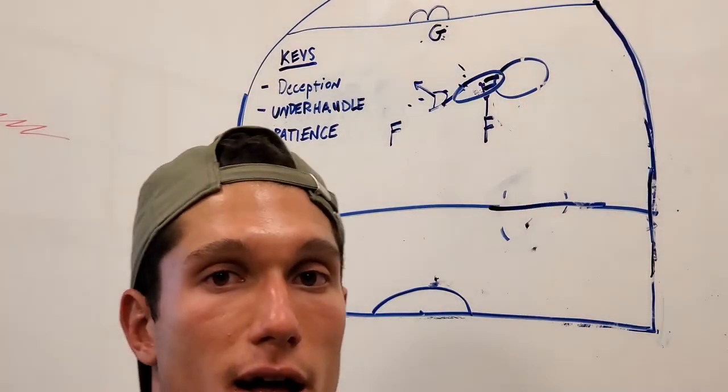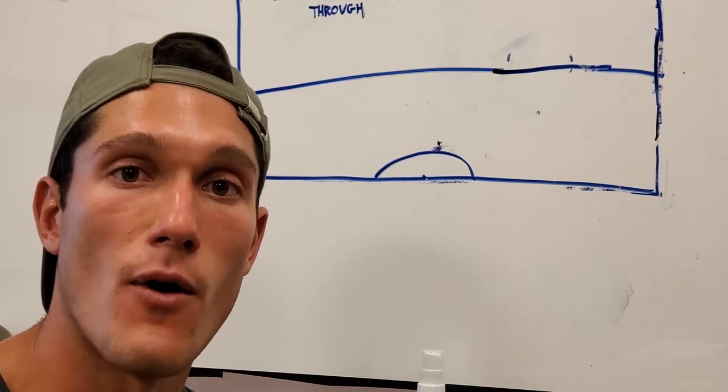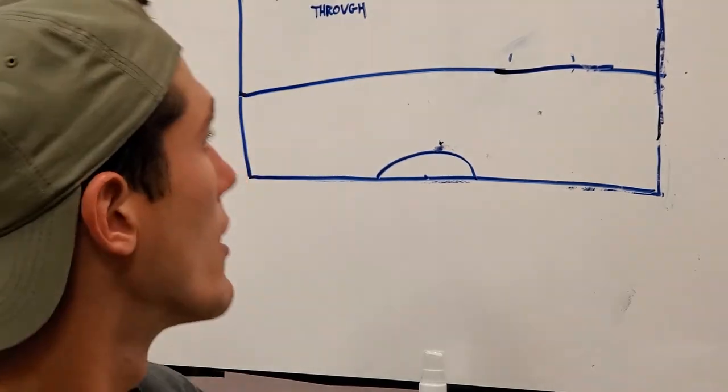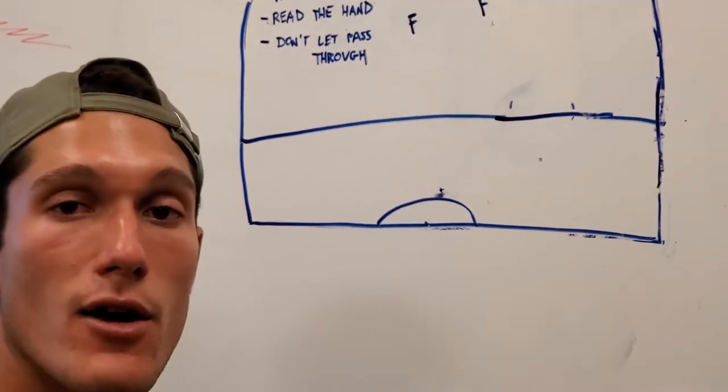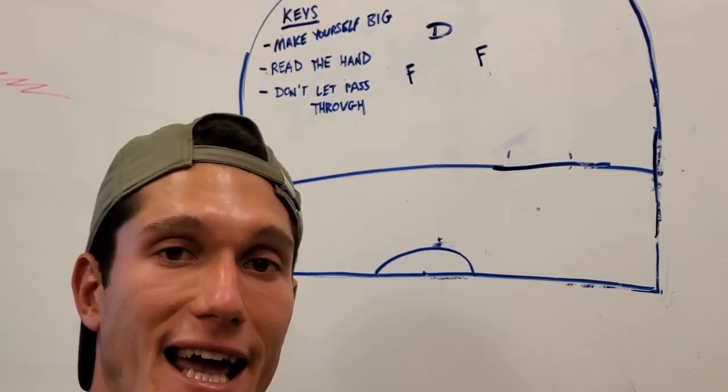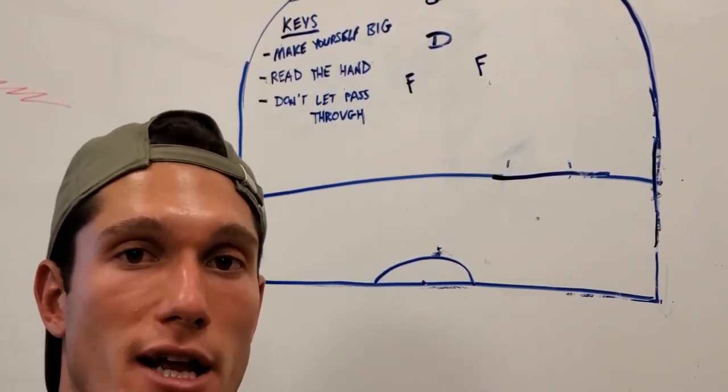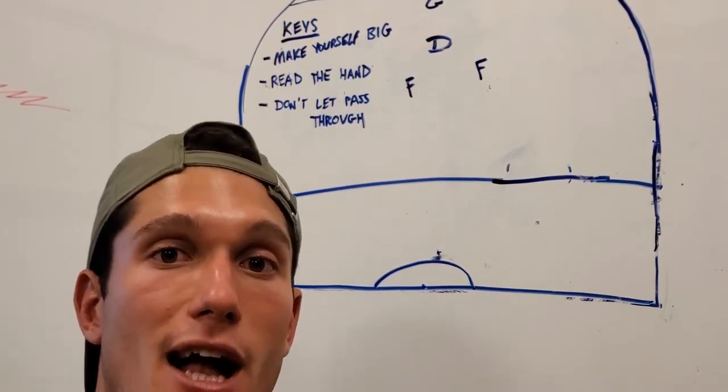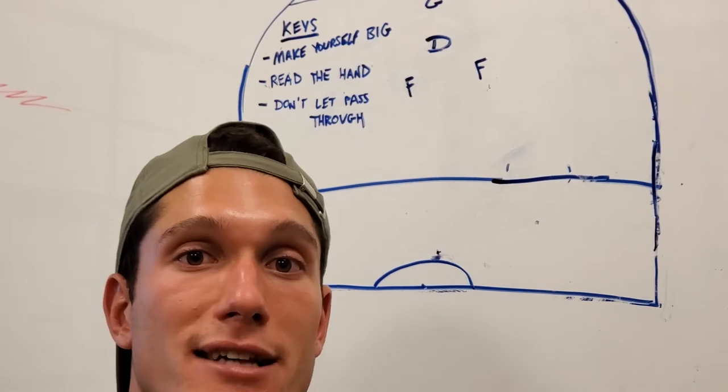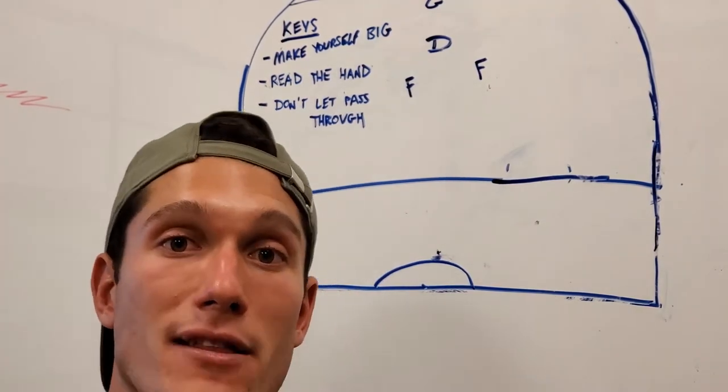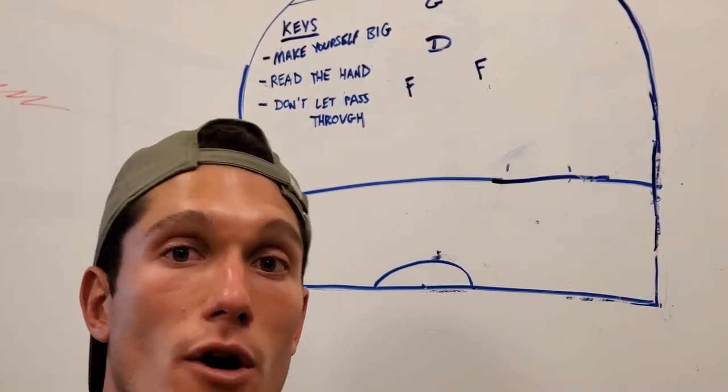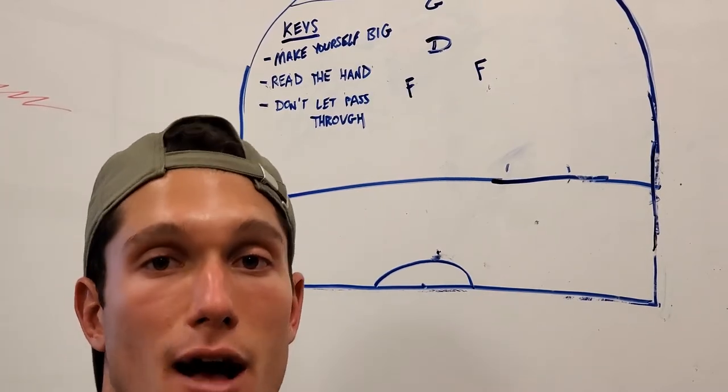I'm going to talk about now defending a two-on-one rush as a defenseman and some keys that go into it. The first key is making yourself big - how could I use my skates, my stick, my body positioning to make it look as though I'm taking up a lot of space. You want to make yourself big as possible so the forward thinks in their mind that there's no way a pass can get through.